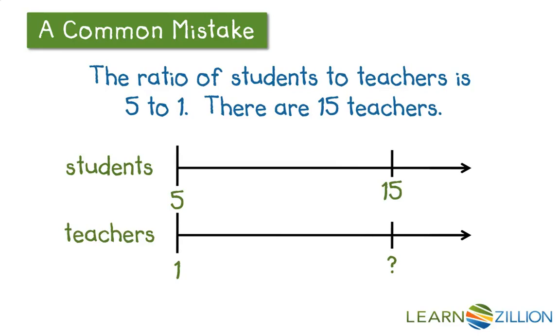In the actual scenario, I'm clearly told that there are 15 teachers. But when I went through and set up the double number lines, you may have noticed that I put 15 on the student's line. That information was put on the wrong line. So while I can still solve for my question mark, the answer I get will not answer the question of how many students there are, because I set up my problem incorrectly.